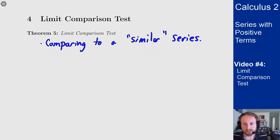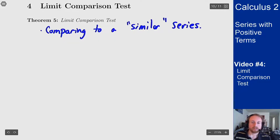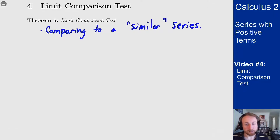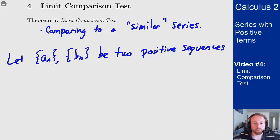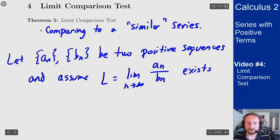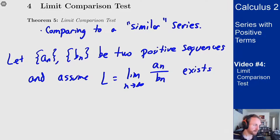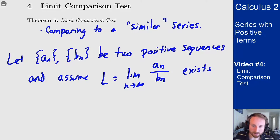I'll write out the formal definition and then go into some discussion of how it works and examples of how you would use this. We're going to let a_n and b_n be two positive sequences, and we'll assume that the limit of their ratio a_n over b_n exists. If this limit doesn't exist, you can't do anything with this. But assuming this limit exists and equals L, then we get the following.